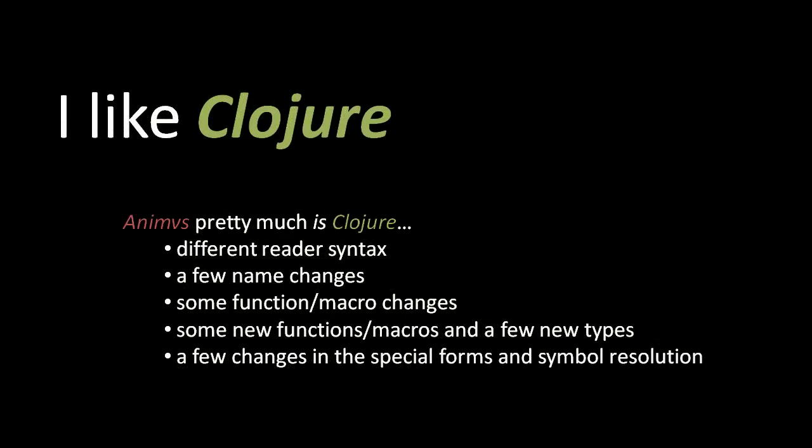Animus is implemented on top of Clojure. What gets changed is, first of all, there's a different reader syntax. Some names in the standard library get changed — some functions and macros, their arguments, names, and functionality change just a bit. We also add new functions, new macros, and new types. And in the underlying compiler we change a few of the special forms and tweak the rules for symbol resolution a bit.